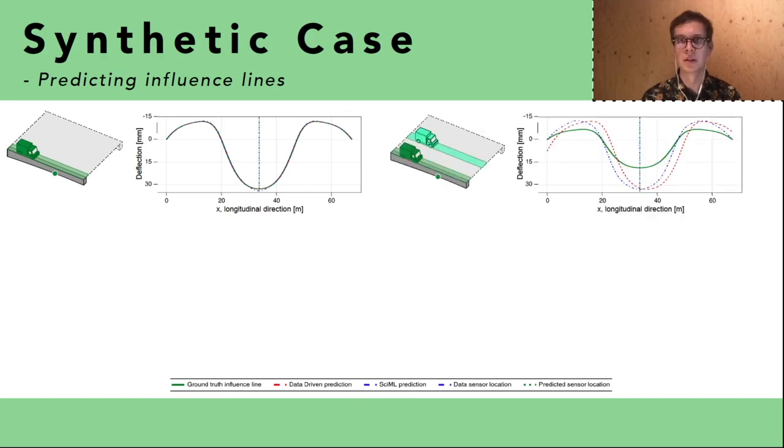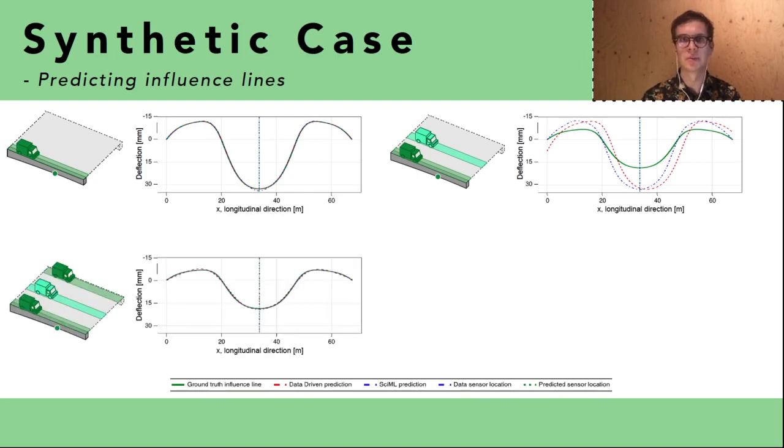If we want to predict another influence line possibly due to another moving load in another lane of the bridge and using only one influence line as data, neither of the models can do this accurately. Instead we need additional information in order to make a good fit. But this is possible for both of the models.